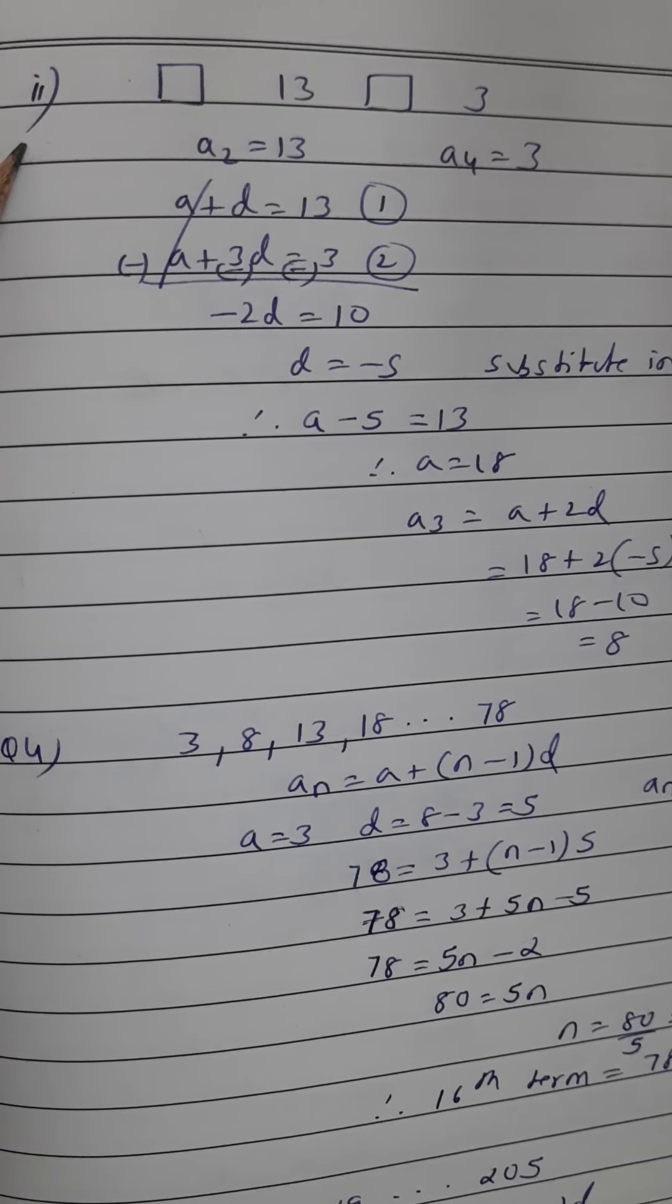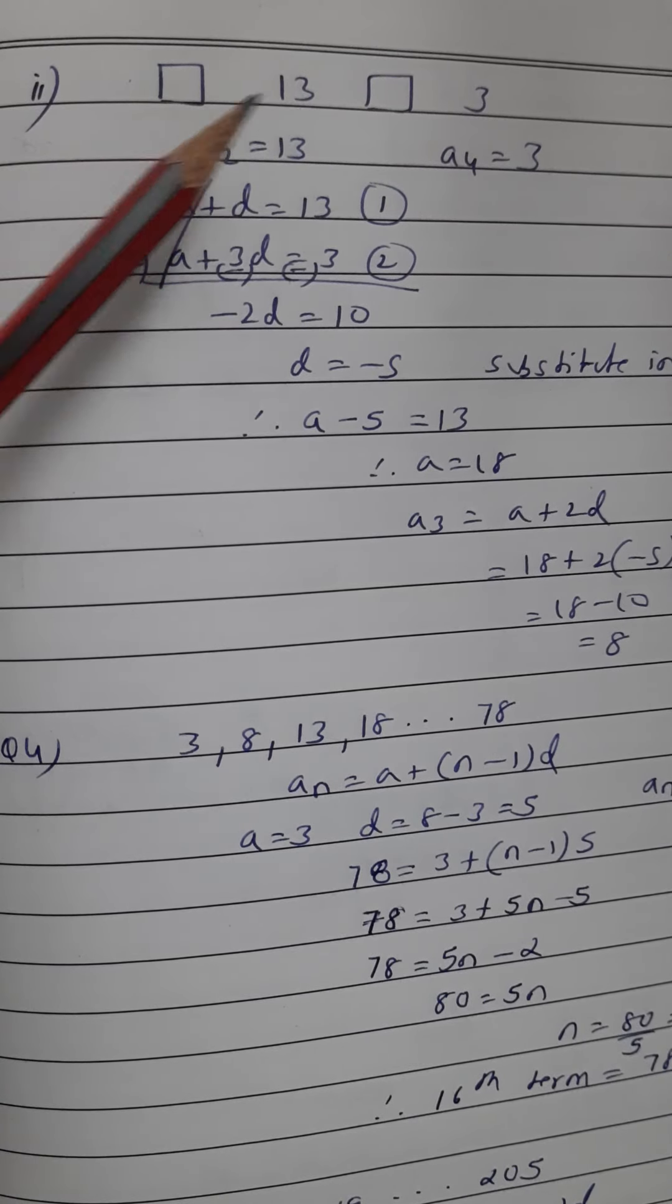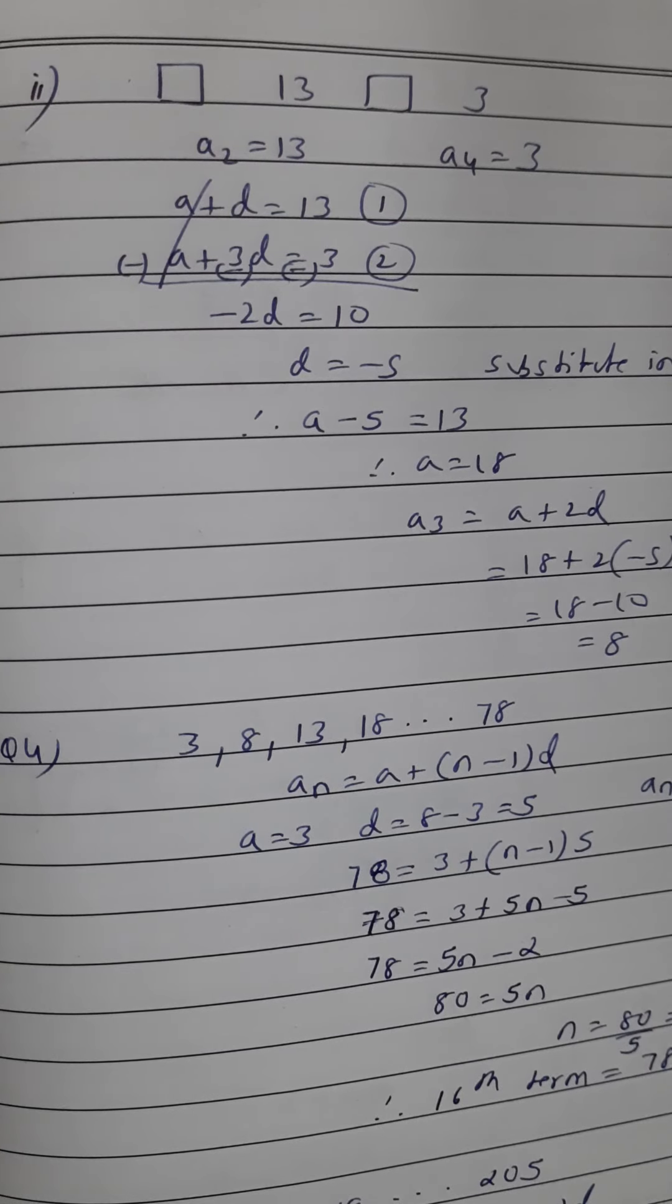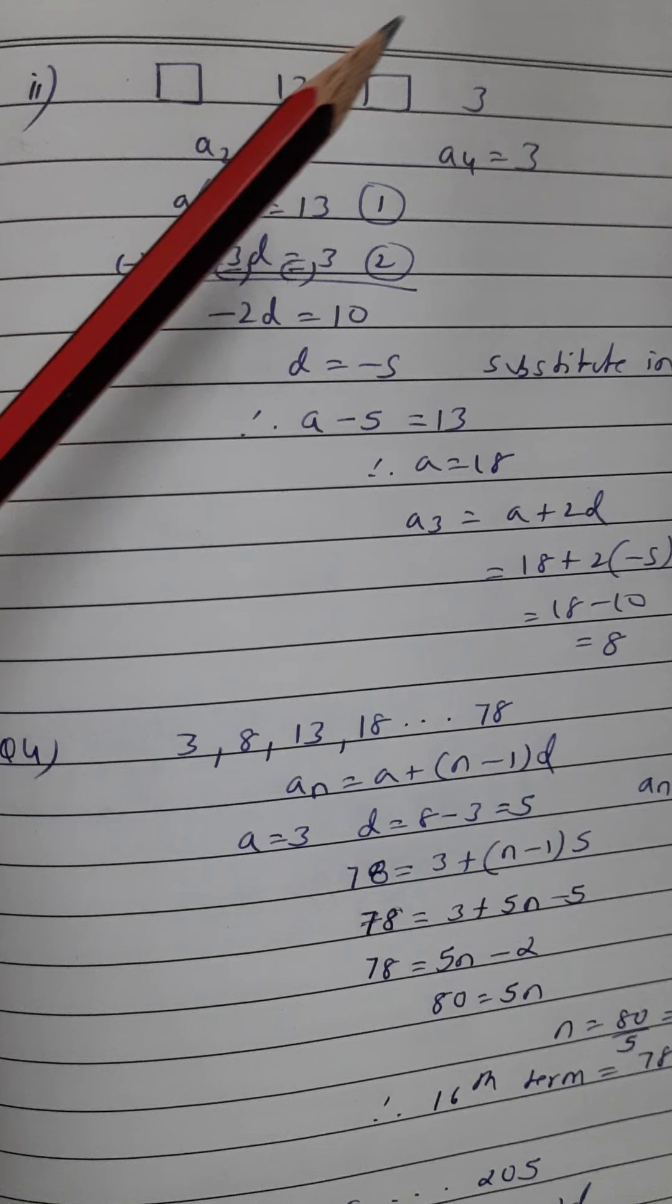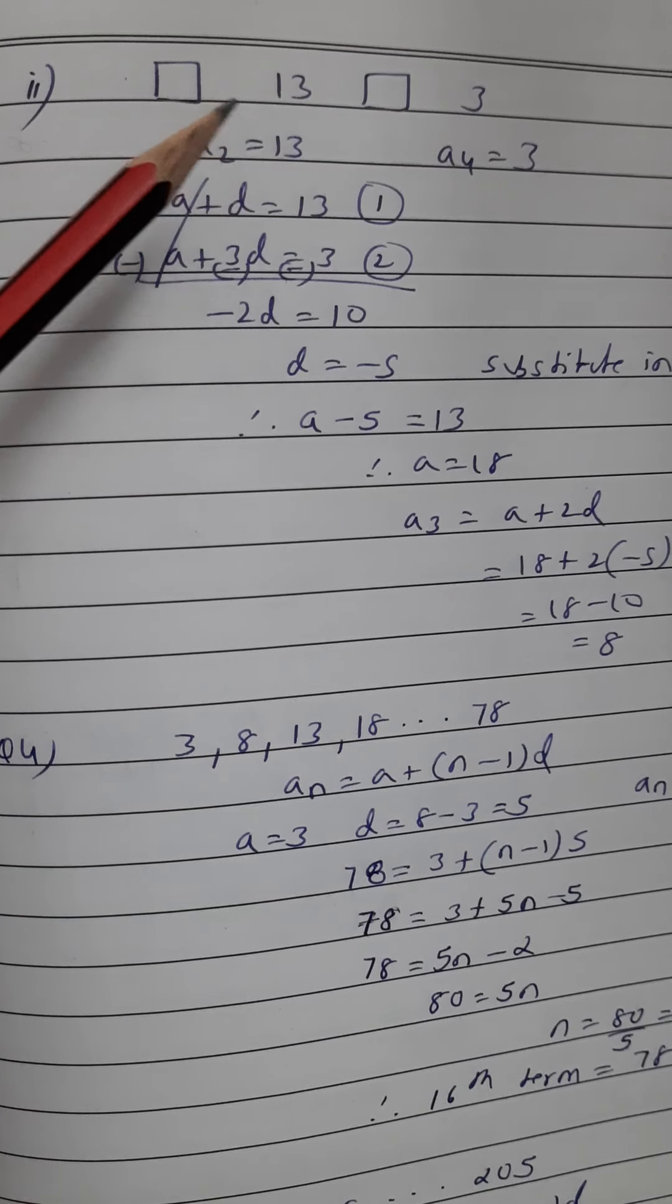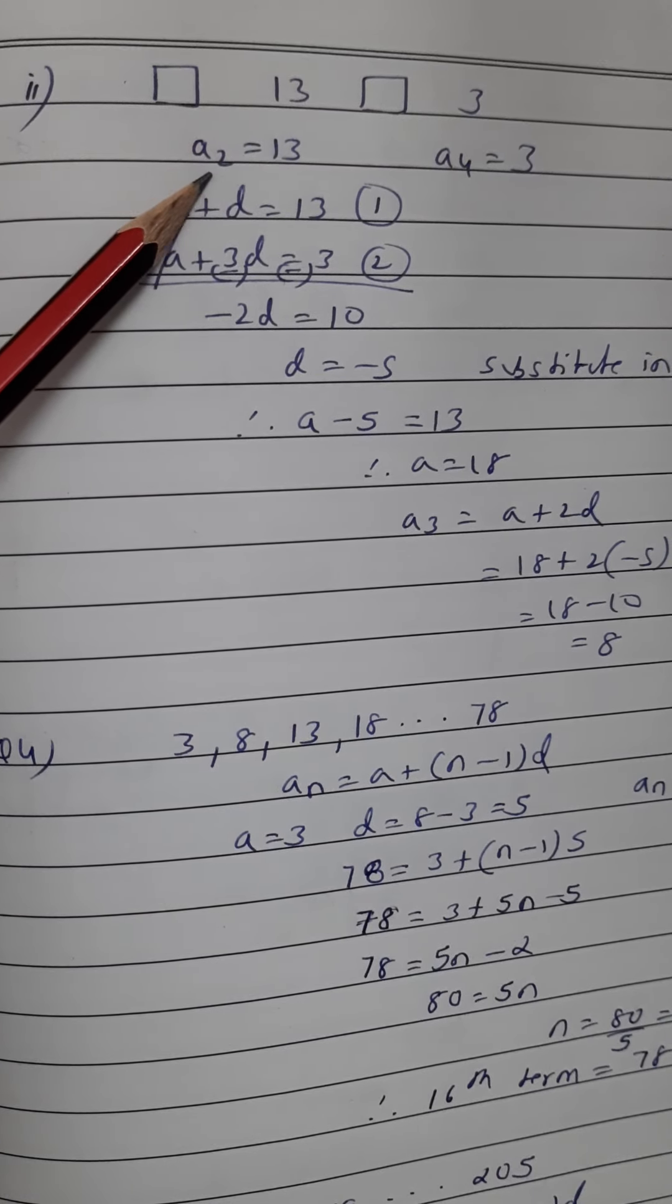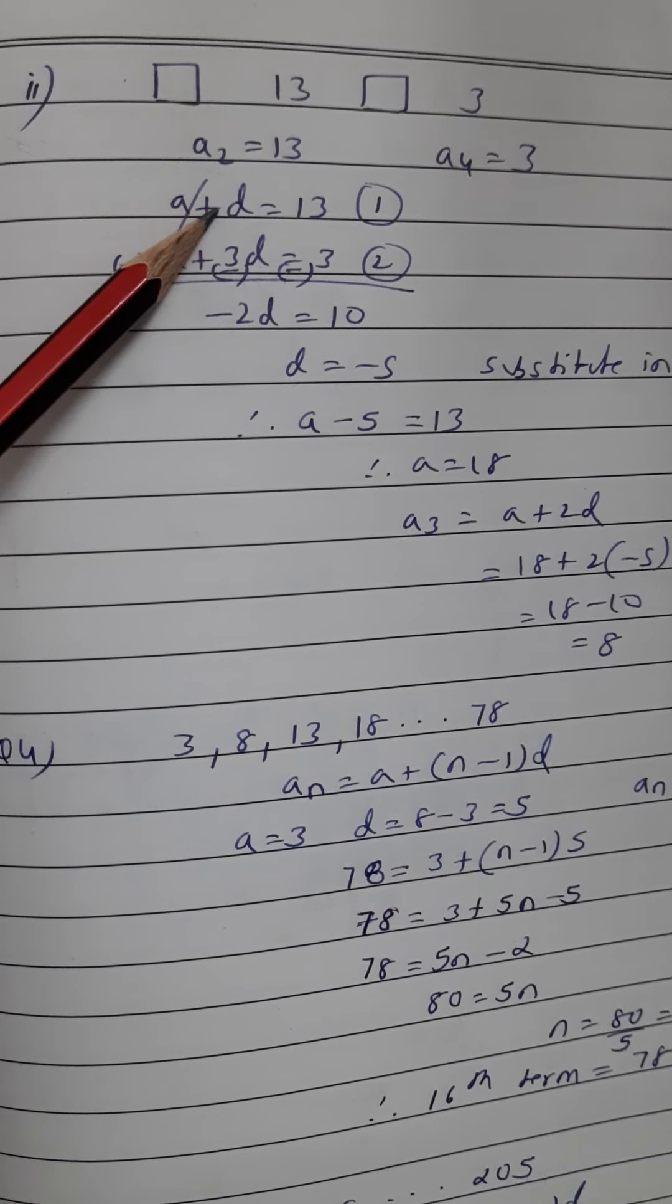Now let's look at the second part, question 3 part 2. Okay, there are two boxes here. A is not given, we don't know the common difference also, but we know the second and the fourth term. So I just now explain to you that the second term means it will be a plus 1d, that means only a plus d.